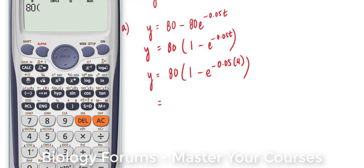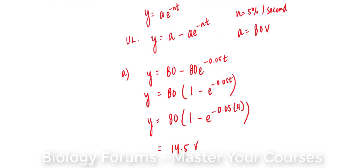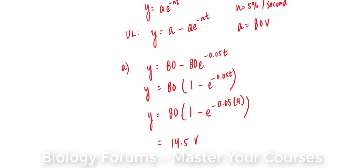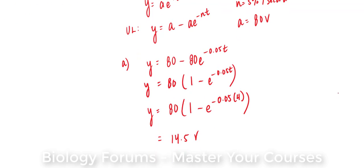80 bracket 1 minus e to the power of negative 0.05 bracket 4, close the bracket, equals 14.5 volts. So after 4 seconds, the capacitor will have increased to 14.5 volts.